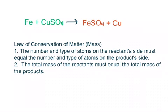It is important to remember that the arrow is effectively an equal sign. Since the Law of Conservation of Matter states the number and type of atoms on the reactant side must equal the number and type of atoms on the product side. The law also means that the total mass of the reactants must equal the total mass of the products.